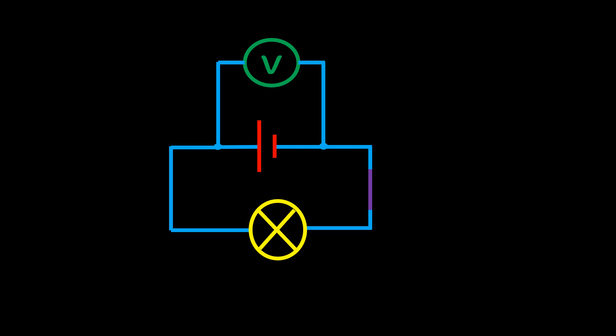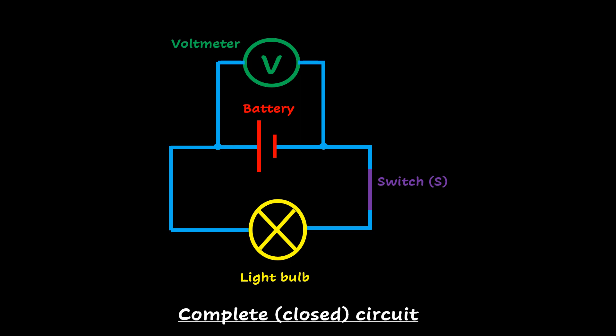Now consider a slightly different scenario. We still have conducting wires in blue, the battery, the light bulb, and the voltmeter connected across the two ends of the battery to determine the potential difference across it. However, note that the switch S is now closed, meaning the circuit is complete. There is a flow of charge in the circuit because the switch is closed. When you measure the potential difference across the terminals of a battery in a complete circuit, you are measuring what is called the terminal potential difference of the battery.